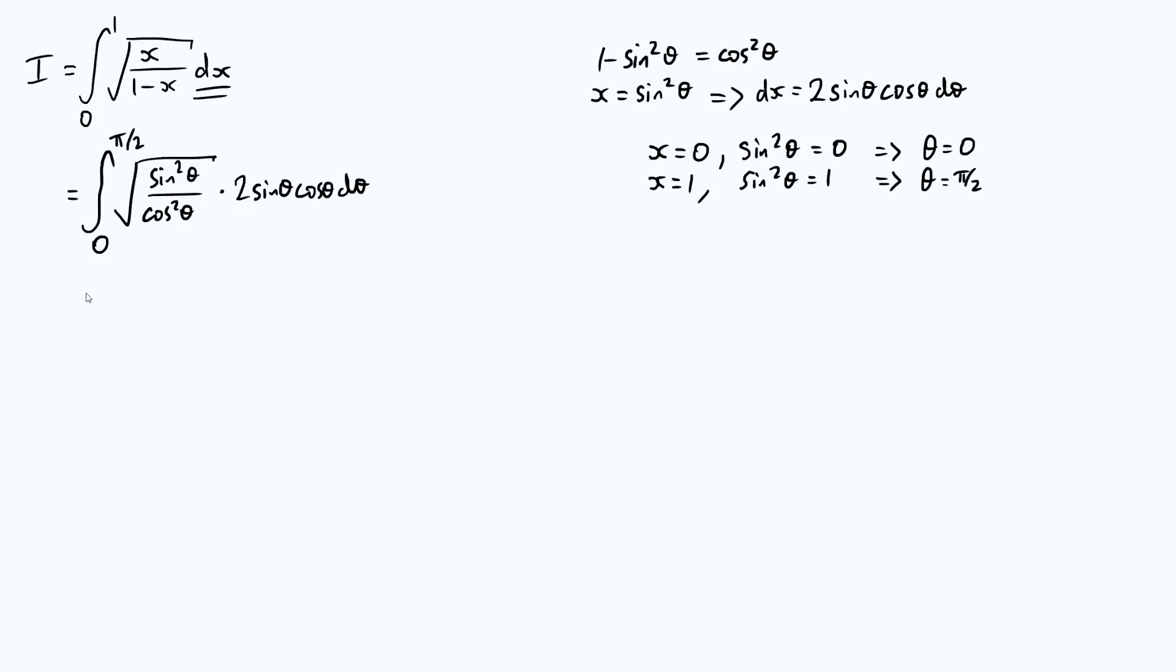So now we can just simplify this a bit. And so, we've got the integral from 0 to pi over 2 of, let's take the square root, it's just sine theta over cos theta times 2 sine theta cos theta d theta. Now the cos theta on the bottom conveniently cancels with the cos theta on the top. And so we are left with the integral from 0 to pi over 2 of just 2 sine squared theta with respect to theta.